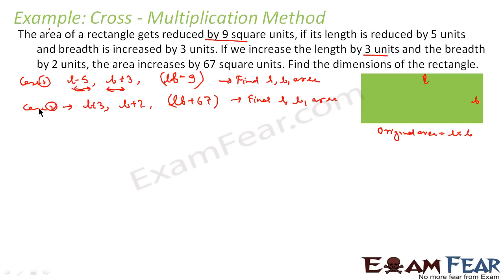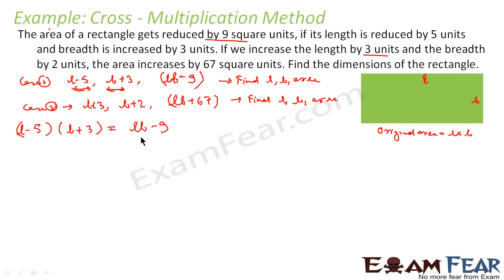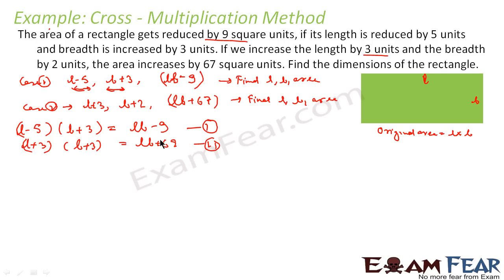Now let us equate. In case 1, (l minus 5) into (b plus 3) also equals lb minus 9 — these are both expressions for the final area in that case, so we can equate them. This gives us equation 1. For case 2, (l plus 3) into (b plus 2) equals lb plus 67. This is equation 2. I have two equations and I will now simplify them.